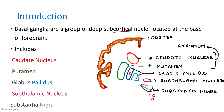Next, we have to mention that the caudate nucleus and putamen are together considered as the striatum because they are functionally together. So it is called striatum — caudate nucleus and putamen are together called striatum.